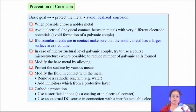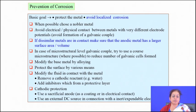Whatever surface you are modifying should be protective in that particular environment. Protective means that the film formed from that alloying element is highly stable in terms of its strength, has very low diffusivity through the oxide, and low ionic conductivity — so the film forming on the surface is highly protective in nature.